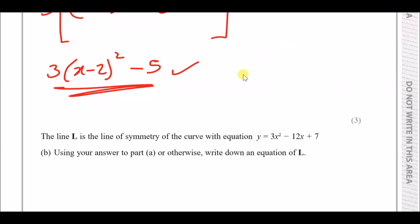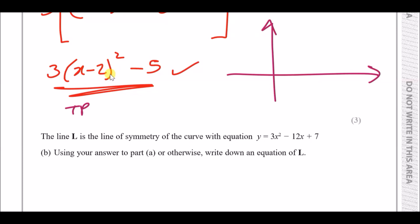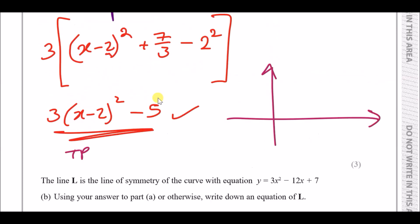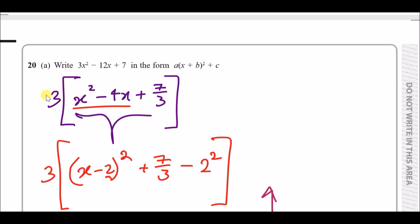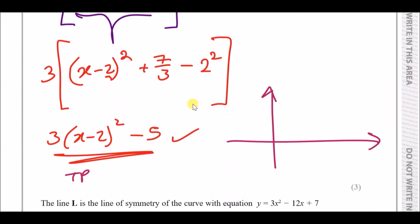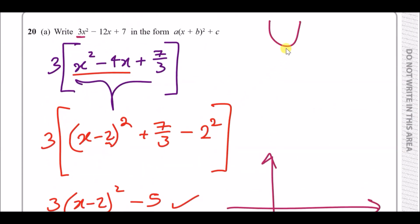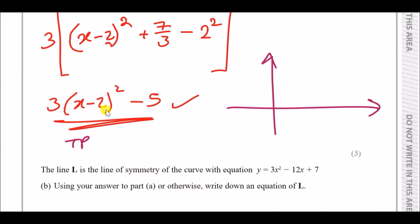From completing the square, two key things: first is the turning point. The values two and minus five are the turning point of the curve. Since it's a quadratic with a positive coefficient, it's going to be a positive U-shape, meaning this turning point is the lowest point on the curve.